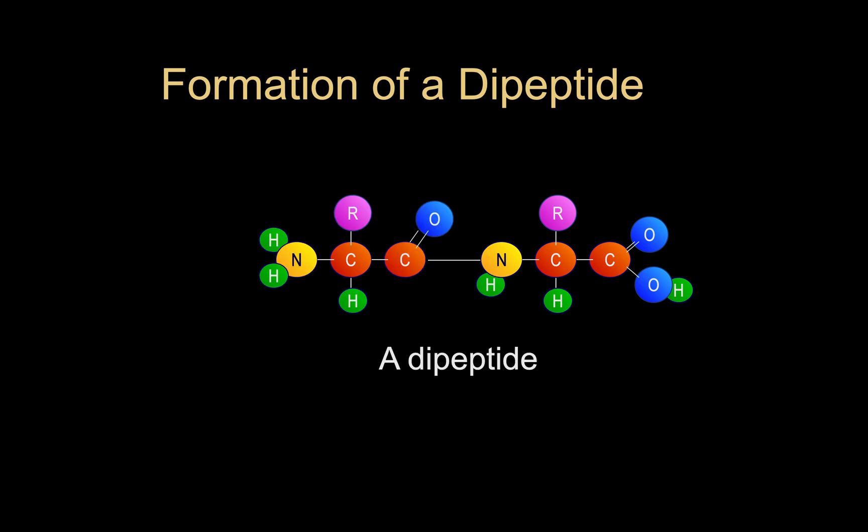The resultant molecule here now has two amino acids joined together so we would now call it a dipeptide. If we were to have more than two amino acids joined together, that would be referred to as a polypeptide.